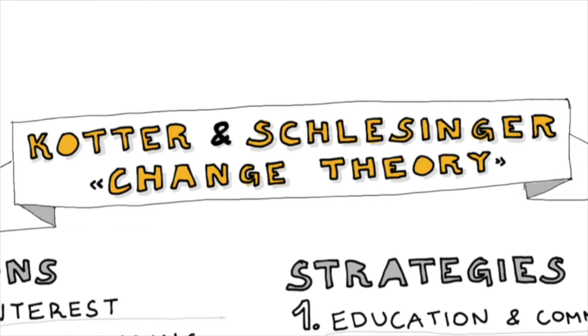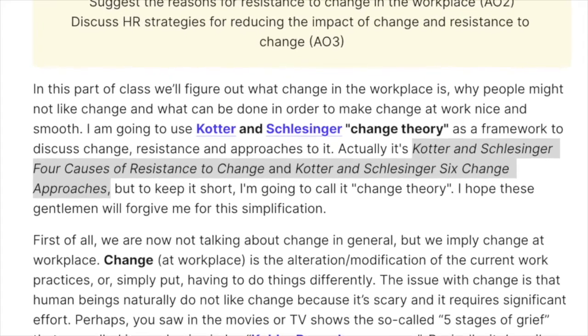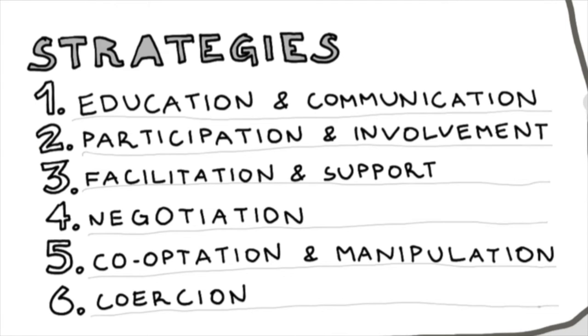I'm going to use Kotter and Schlesinger's change theory. It covers four reasons for resistance to change and four strategies — or approaches — to dealing with change, all applying to businesses and change at the workplace. The first reason is self-interest. Employees do not understand how change benefits them personally and do not really care about distant and intangible benefits for the organization. Thus, they are reluctant to drive change, not knowing how it benefits them personally.